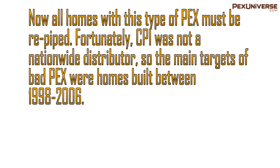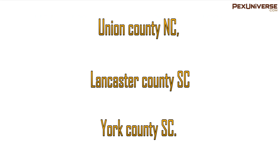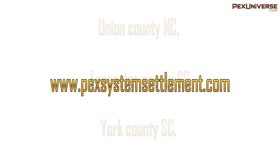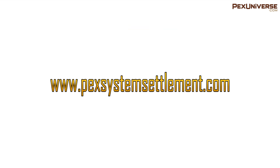All homes with this type of PEX must now be re-piped. Fortunately, CPI was not a worldwide distributor, so the main targets of bad PEX were homes built between 1998 and 2006, located in Union County, North Carolina, Lancaster County, South Carolina, and York County, South Carolina. If you want to see if your home is affected by Duropex, you can follow the link in the description below.